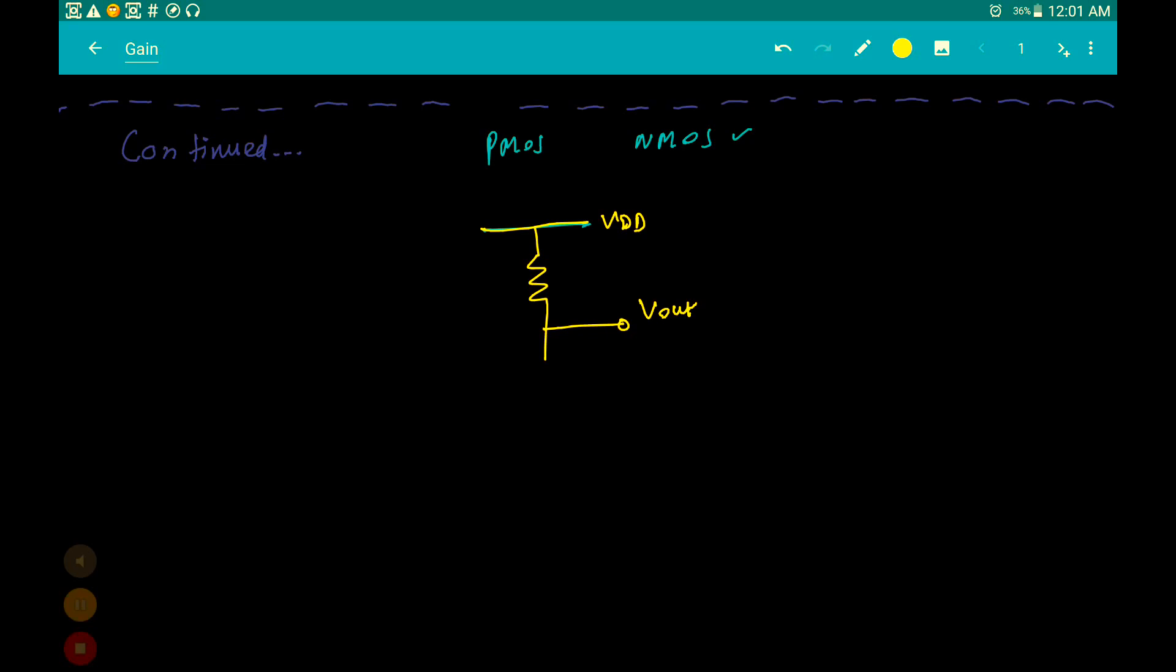We are taking the output over here, and we have our NMOS connected. Since it's an NMOS, the arrow comes over here, and this is connected to ground.